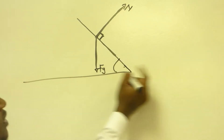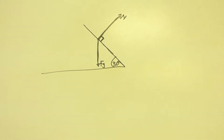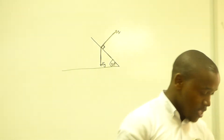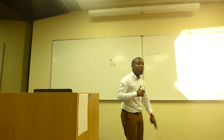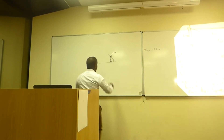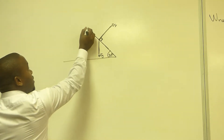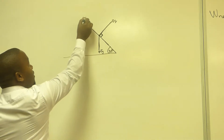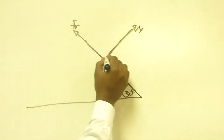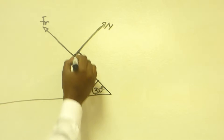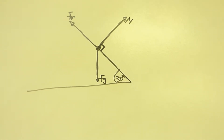Now, Kylie goes down the ramp and we are told she experiences a constant frictional force of 1.9 newtons, meaning there is friction acting opposite to her motion. I'm going to place friction, FR, acting up the ramp. In a free body diagram, we indicate only the forces acting on the object.